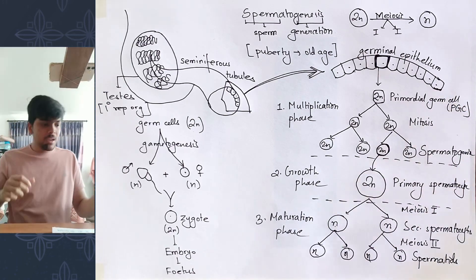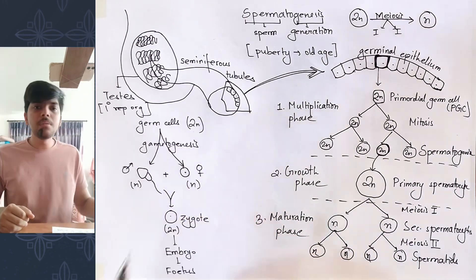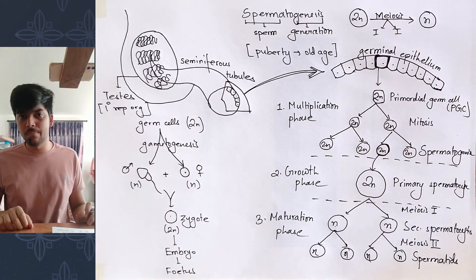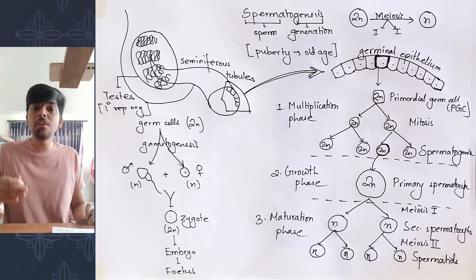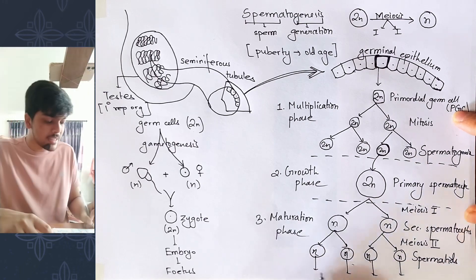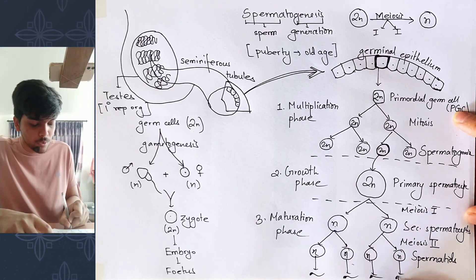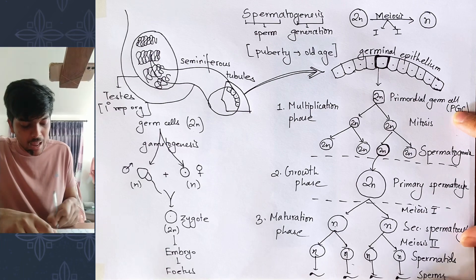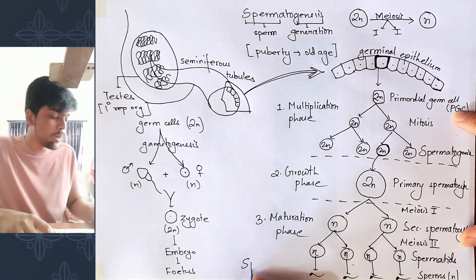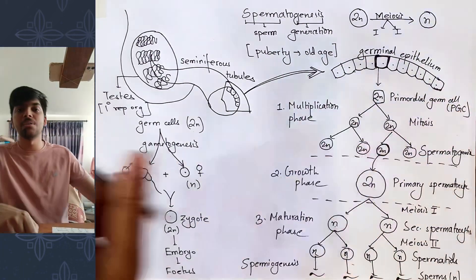In order for the male gamete to fertilize the egg, it needs to be motile. However, spermatids are not motile. So spermatids need to be converted into their motile form — called sperms. Each spermatid gets converted to a motile sperm, which is haploid as well. The process by which spermatids get converted to sperm is known as spermiogenesis. And this is how the process of spermatogenesis completes.